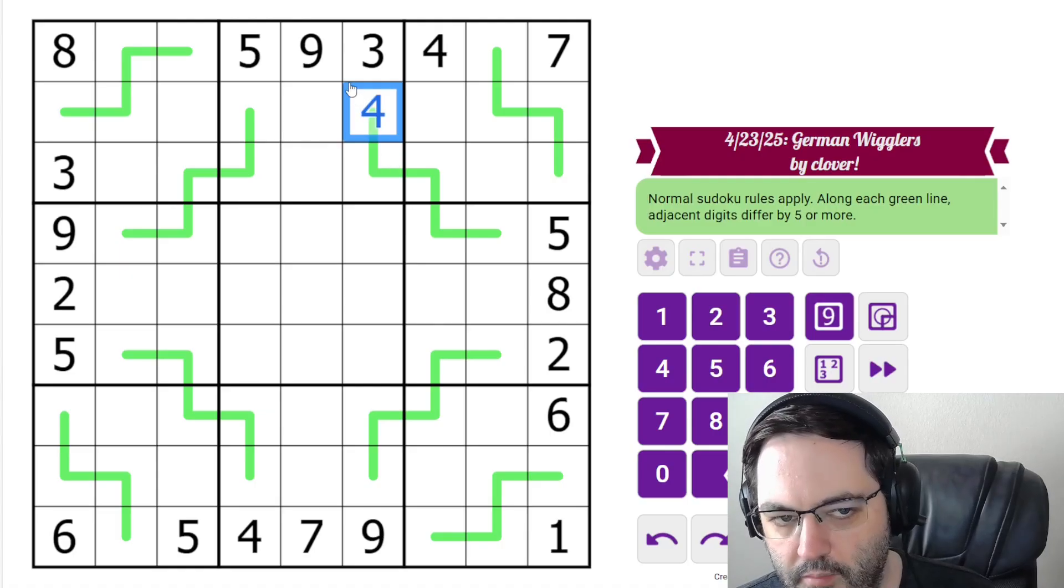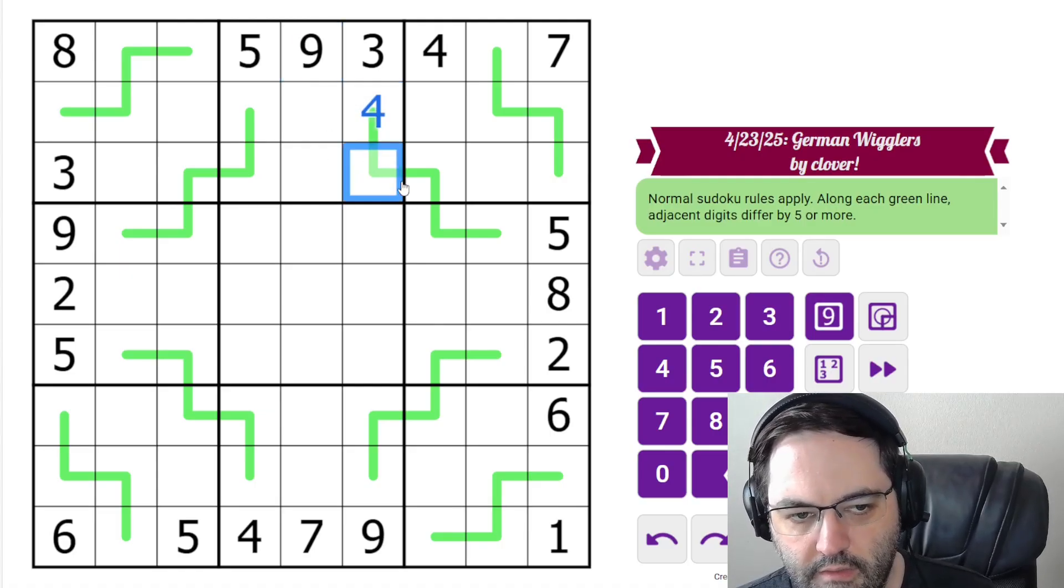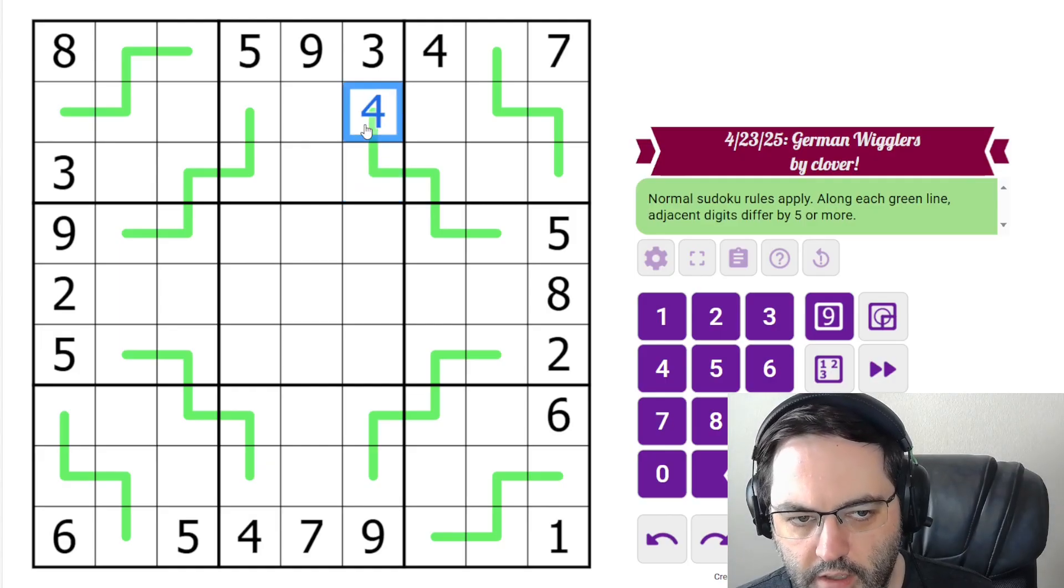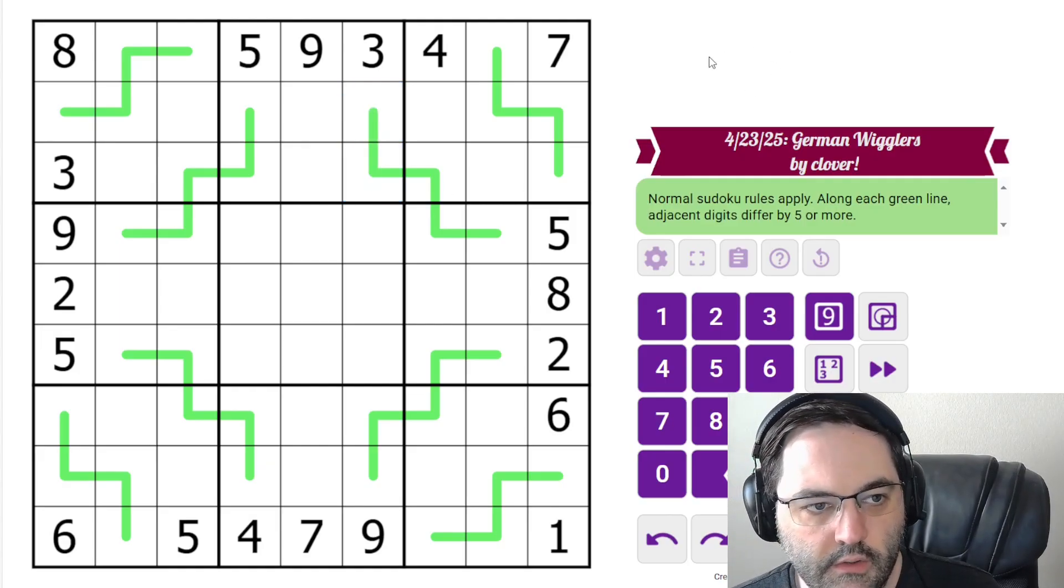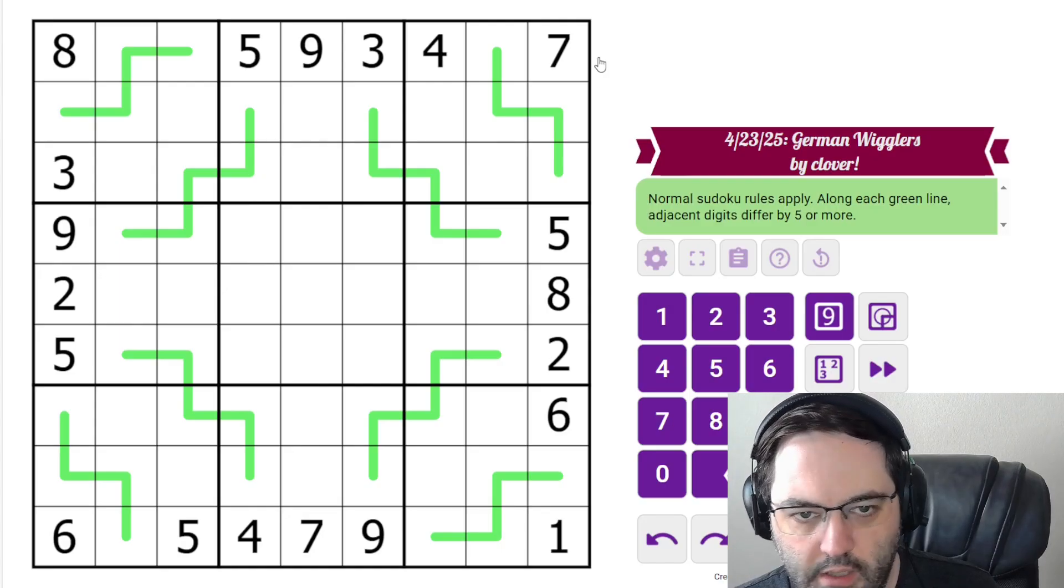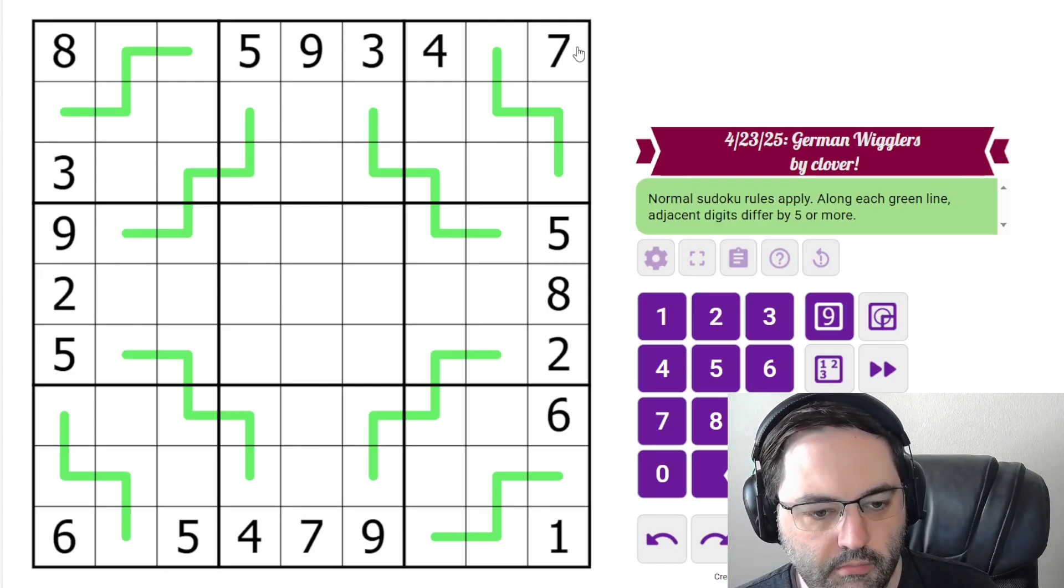So for example, this cannot be a 4, because there's a 9 in the box, and the only thing 4 can go next to on a line is a 9. So those are the rules, and a reminder of some of the tricks that we have for German Whispers.